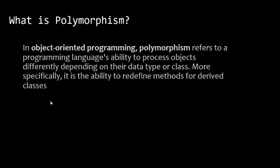Let's get into what Wikipedia says about polymorphism. In object-oriented programming, polymorphism refers to a programming language's ability to process objects differently depending on the data type or class. More specifically, it is the ability to redefine methods for derived classes.